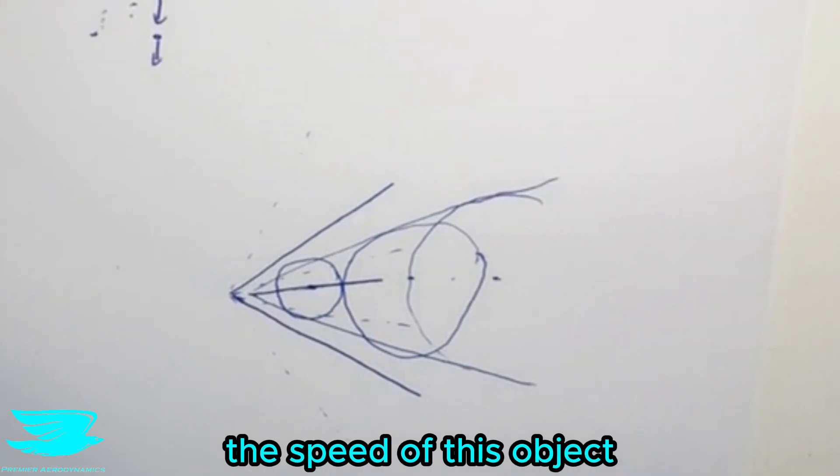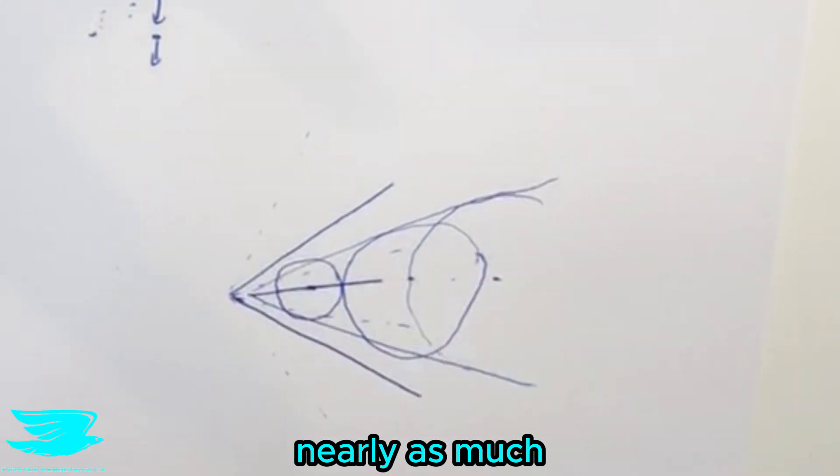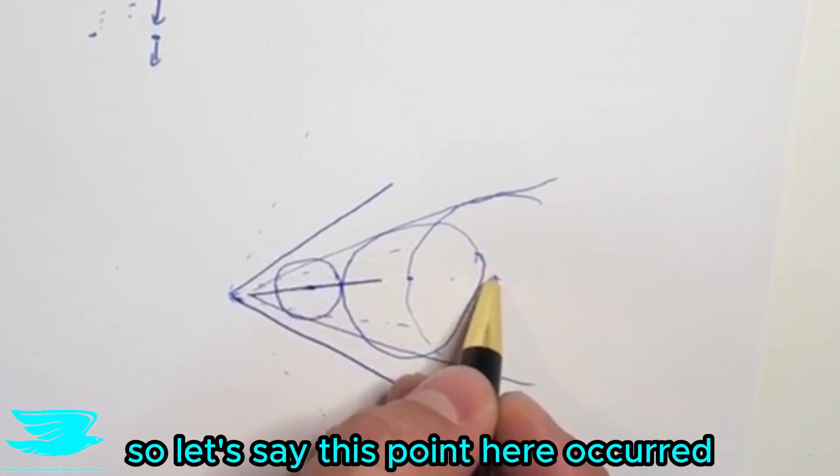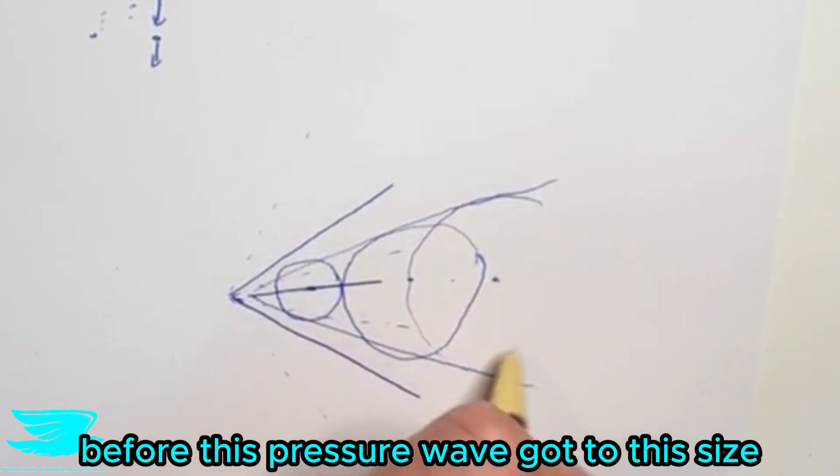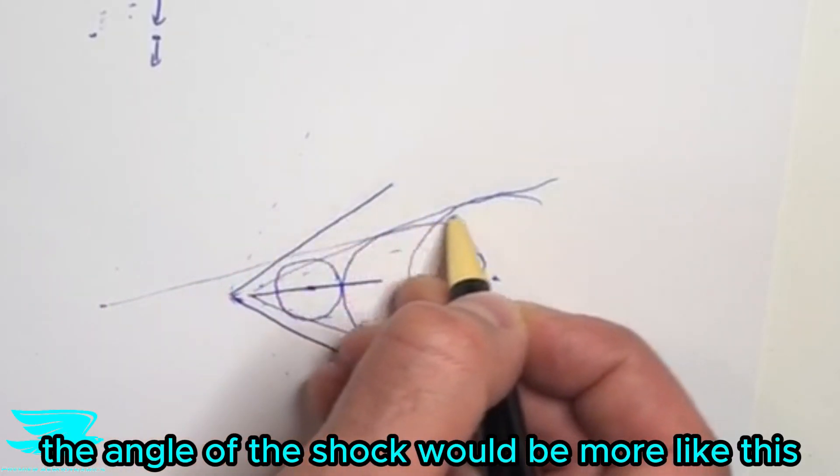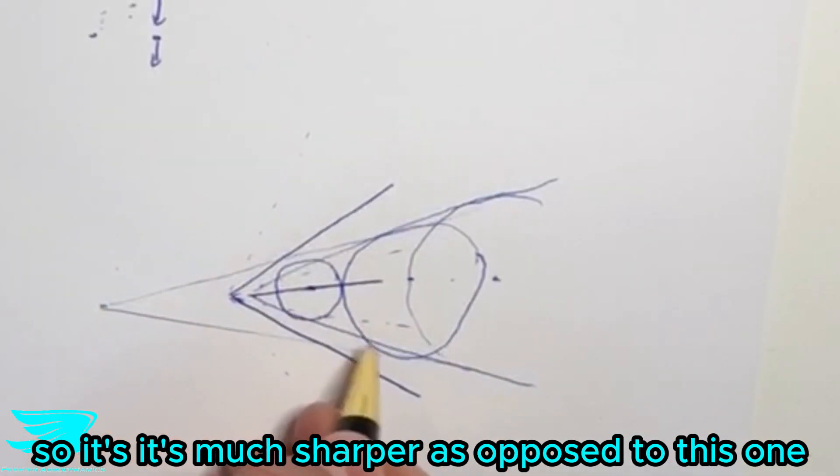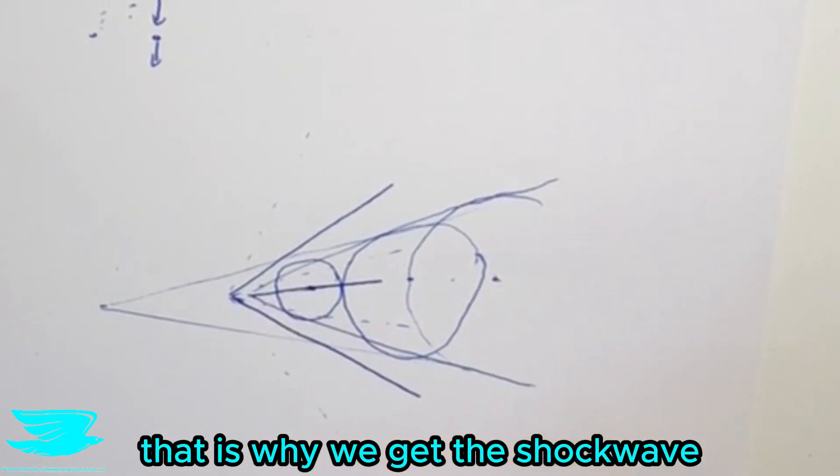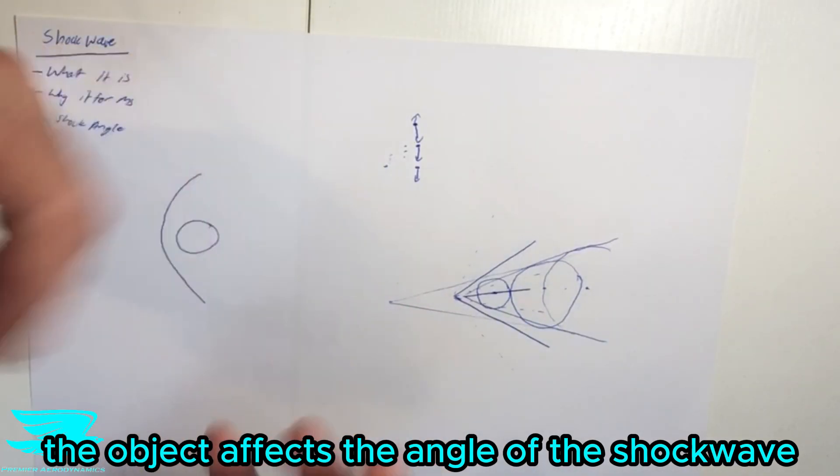If we were to think about the speed of this object, if it was going faster, then these waves wouldn't expand nearly as much in the same amount of time, but they'll be staggered more. Let's say this point here occurred, but now this needle would be all the way up here before this pressure wave got to this size. So now if the needle was here, the angle of the shock would be more like this. It's much sharper as opposed to this one, which is a bit more obtuse and this one, which is in between. So that is why we get the shock wave and how the speed of the object affects the angle of the shock wave.